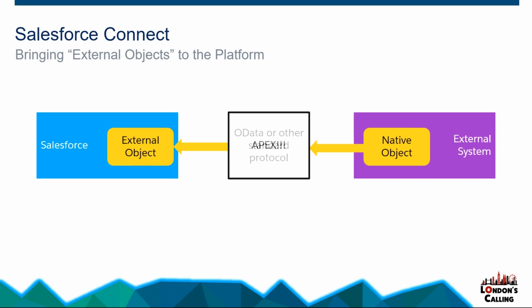An Apex data connector is, instead of using a standard protocol like OData, you use Apex. And what happens is, when you ask for the schema of an object, or when you query an object, it goes to Apex. Salesforce calls your Apex code and says, what is the object? And get me some records. And your Apex code would do a callout to the remote system.